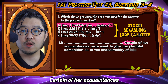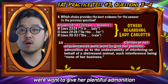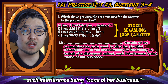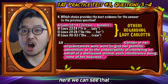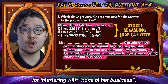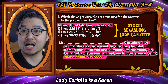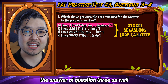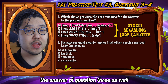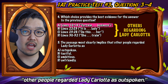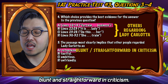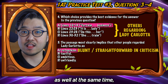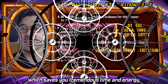Option A, lines 10 to 14: 'Certain of her acquaintances were wont to give her plentiful admonition as to the undesirability of interfering on behalf of a distrusted animal, such interference being none of her business.' Here we can see that others are willing to criticize Lady Carlotta for interfering with none of her business — Lady Carlotta is nosy into other people's lives. This is precisely the answer to question three as well, where the first choice is 'other people regarded Lady Carlotta as outspoken.' Outspoken means blunt and straightforward in criticism. So as you solve question four, you can answer question three at the same time, saving you tremendous time and energy.